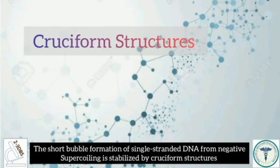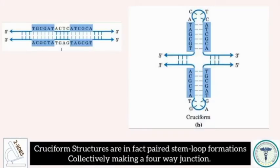The short bubble formation of single-stranded DNA from negative supercoiling is stabilized by cruciform structures. Cruciform structures are in fact paired stem-loop formations collectively making a four-way junction.